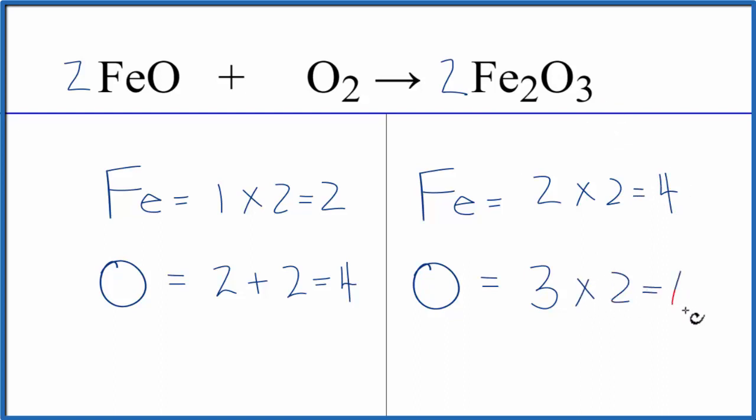So things are a little bit off on this side, but if we change our coefficient here to a four that would fix the Fe's and that might fix the oxygens. So let's try that. We put a coefficient of four and now we do need to update these numbers here.